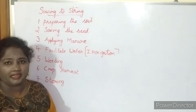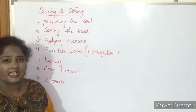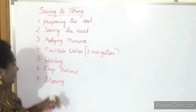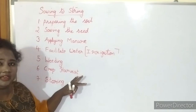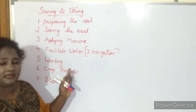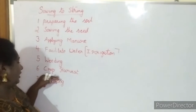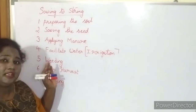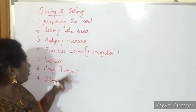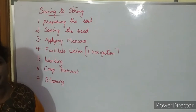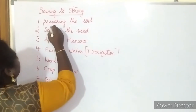Afterwards, he removes the weeds. That process is weeding. Weeding is nothing but removing unwanted or undesirable plants that grow along with the crop. Then, harvest means finally after weeding, he keeps water and the crop will be harvested. He takes the product, and how he stores the product will be seen in storage. These are all the steps involved in agriculture.